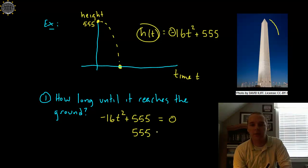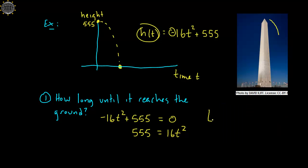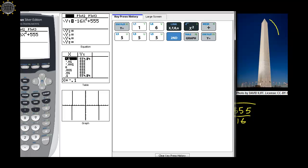So solve this for t, you'd have 555 = 16t², and so divide by 16, and then take the square root, t would equal the square root of 555 divided by 16, and that'll be some decimal value.